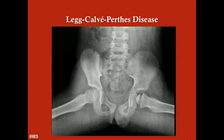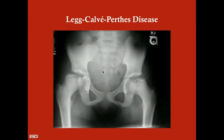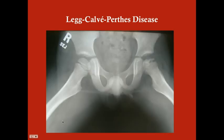On X-ray, Legg-Calvé-Perthes shows calcified necrosis at the femoral head. This may be unilateral — most commonly — or bilateral. You'll see that calcified, necrotic-looking area around the femoral head. Three X-ray examples are shown: one with clear involvement on the left side, one possibly bilateral with subtle involvement on both sides, and one with obvious unilateral left-sided disease.